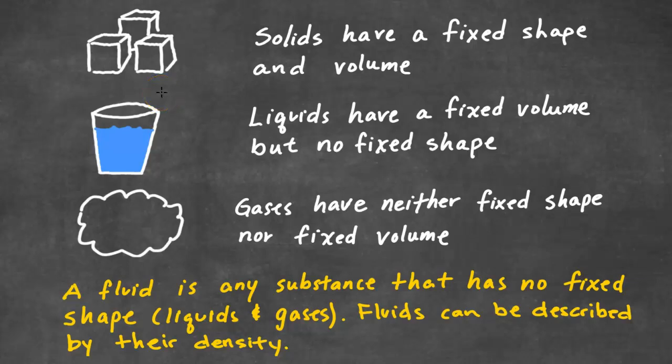In this video, we're going to review fluids for AP Physics 1. We're going to start by comparing solids, liquids, and gases. These are three primary states of matter. Solids have a fixed shape and volume. Liquids have a fixed volume, but not a fixed shape. And gases have neither a fixed shape nor fixed volume. A fluid is any substance that has no fixed shape, such as liquids and gases. Fluids can be described by their density.